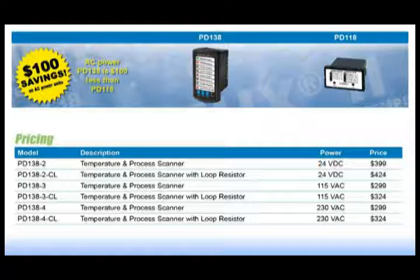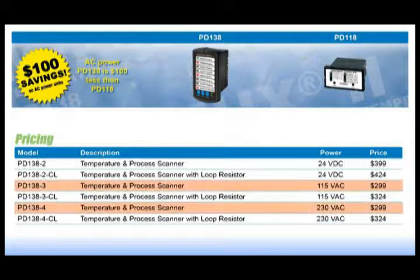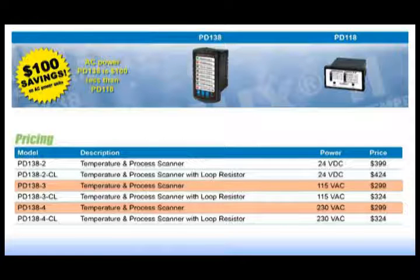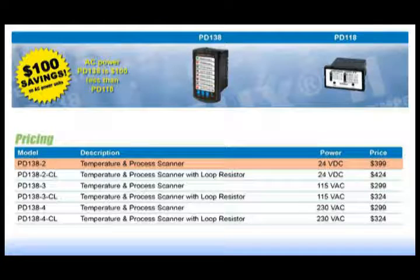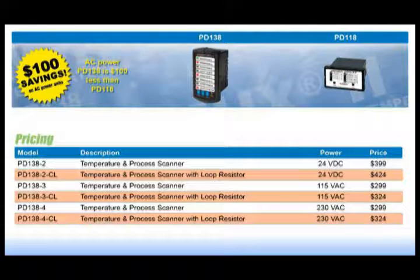The most common configuration of the Minimux is the PD-138-3 or -4, and they're priced at $299. DC power is another $100, and if you want to switch 4 to 20 milliamp signals, you would go with the dash CL version.